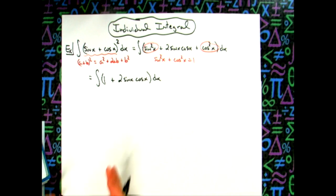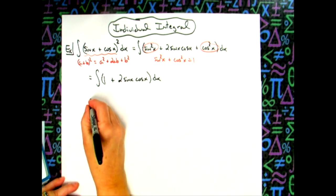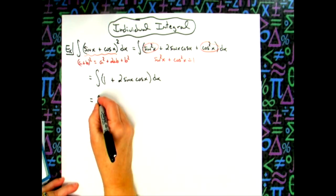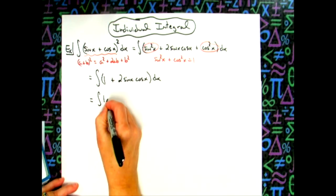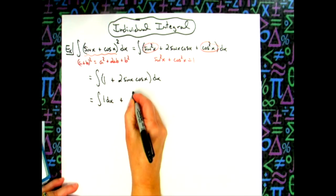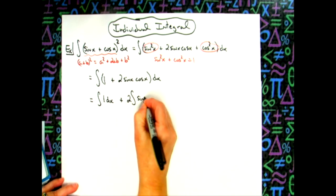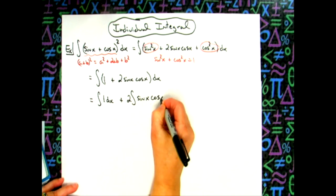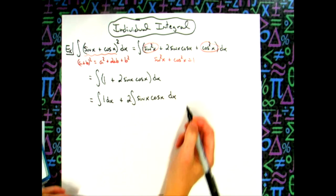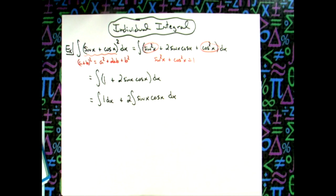Not that you would necessarily need to separate this, but let's go ahead and separate this into two individual integrals. So we'll have the integral of one dx plus an integral. Let's go ahead and pull that two out in front. And then we'll have sine x cosine x, and then our dx.